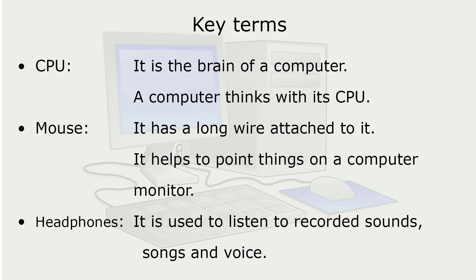Key Terms. CPU: It is the brain of a computer. A computer thinks with its CPU. Mouse: It has a long wire attached to it and helps to point things on a computer monitor. Headphones: Used to listen to recorded sounds, songs, and voice.